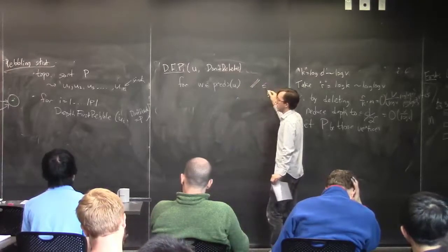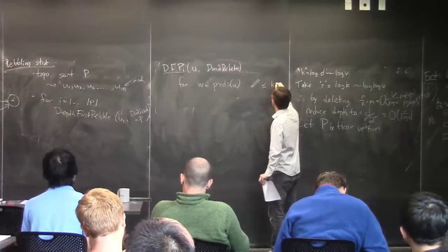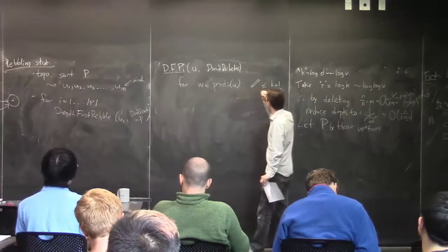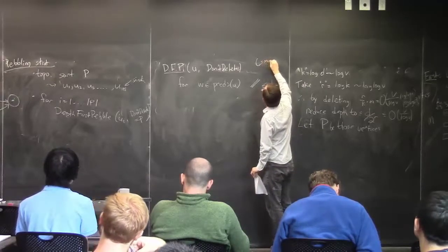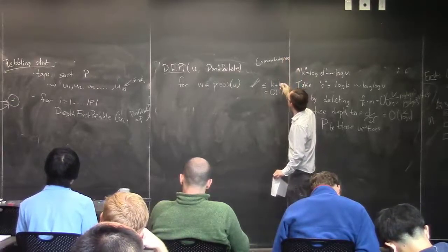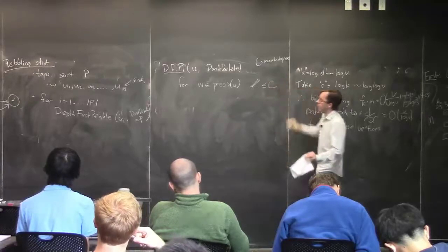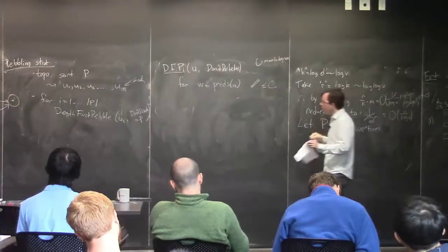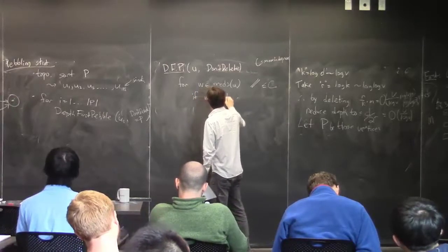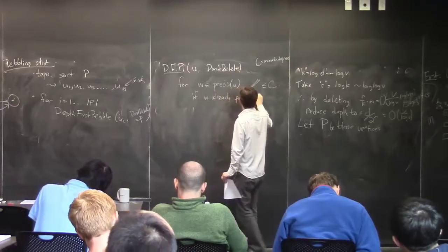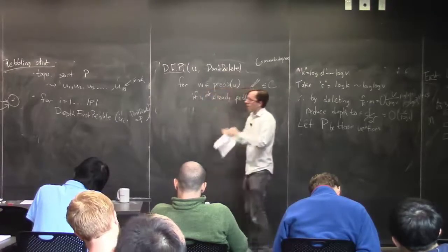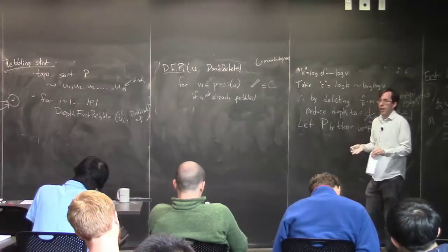When you're pebbling later elements of P, any path going back either terminates at a previously pebbled P-vertex — stopping the recursion immediately — or goes all the way back to a source. Either way, paths have length at most L. It's important that you do it in topological order of P. Student: I don't understand like what happens with C times L.